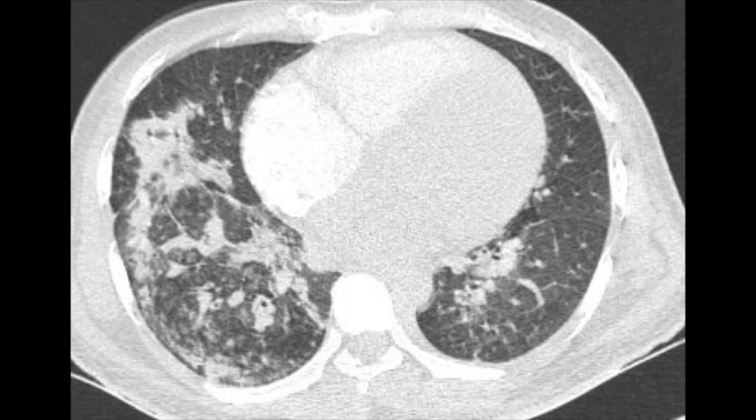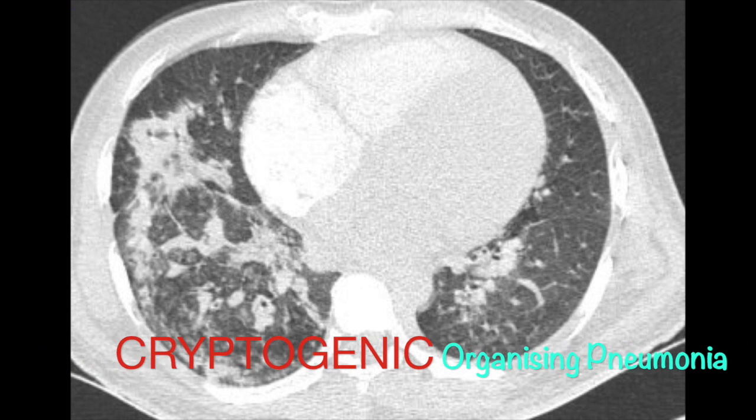What do you have here? You want to call it NSIP, right? But this is not NSIP. These are multiple consolidations, of course with septal thickening and round lesions. When you have consolidations which are peripheral — more triangular, subpleural — think of cryptogenic organizing pneumonia, initially called bronchiolitis obliterans organizing pneumonia (BOOP).